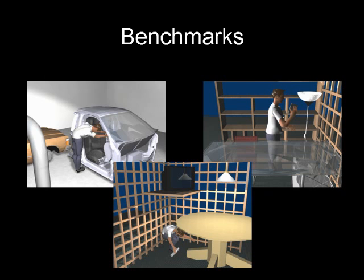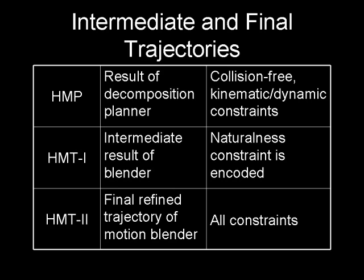We use three challenging benchmarks to test the performance of our algorithm. These are constrained environments with multiple obstacles and tight spaces. Moreover, we need a full-body planner to generate plausible paths in such an environment. We show our results at three different stages in our algorithm. The first, HMP, is the result of a decomposition planner which considers all constraints except naturalness constraints.